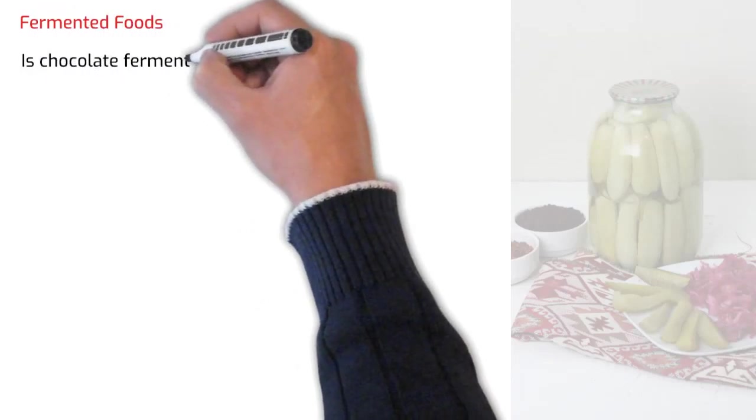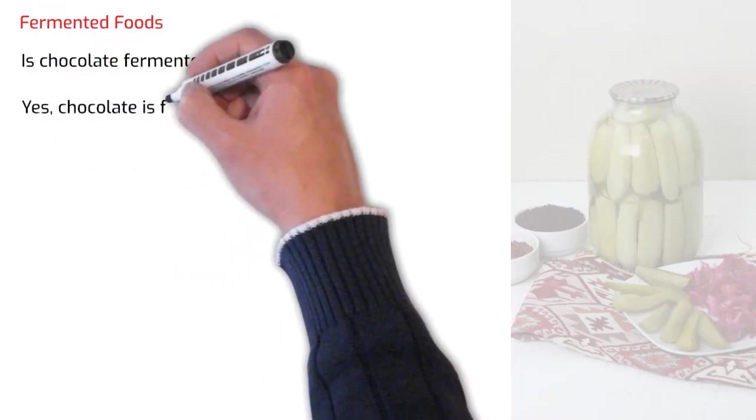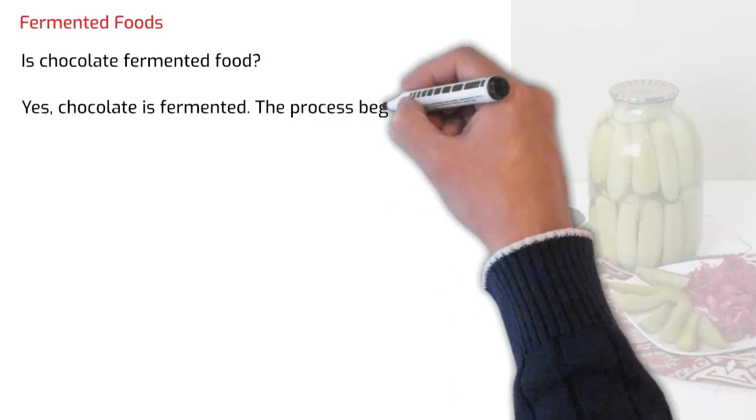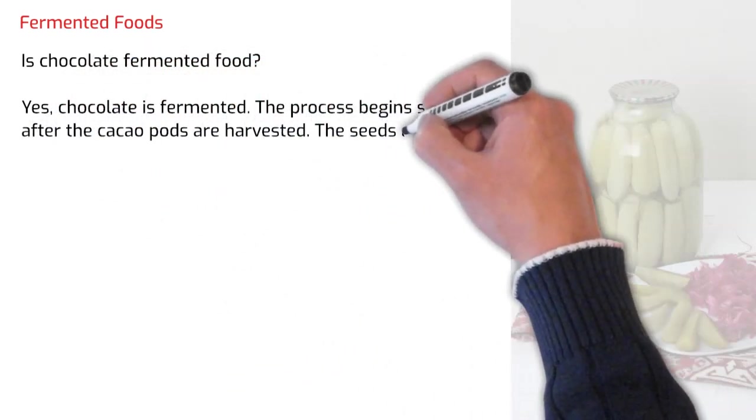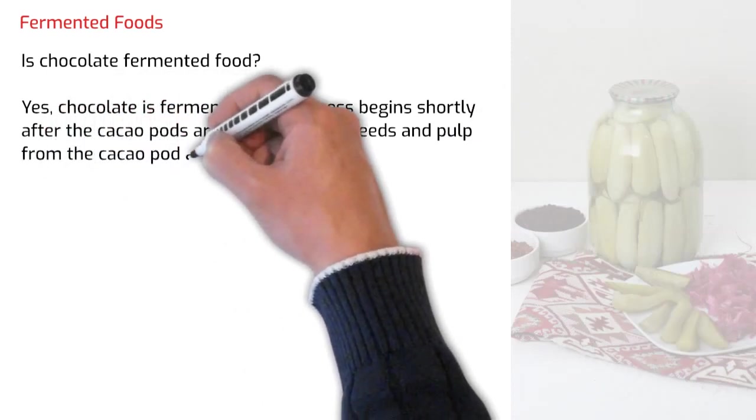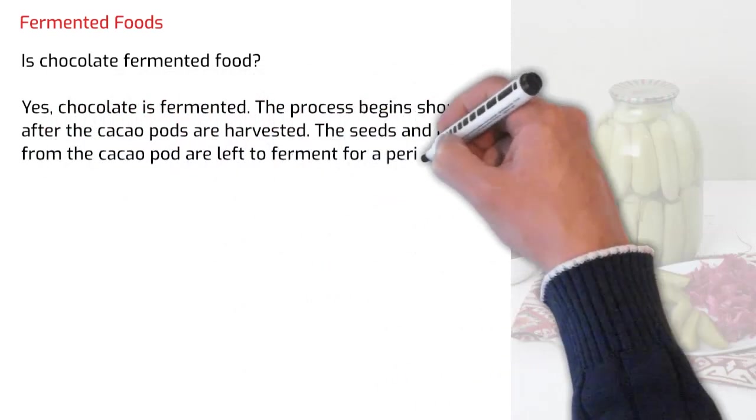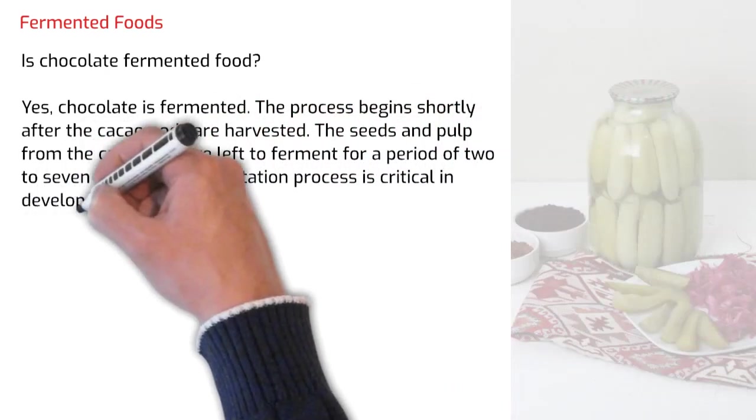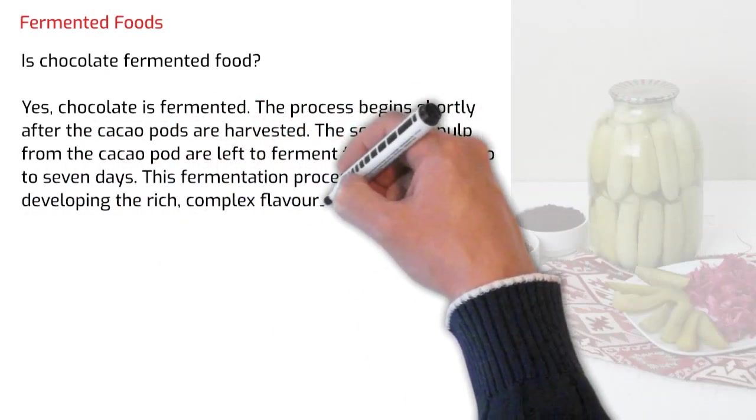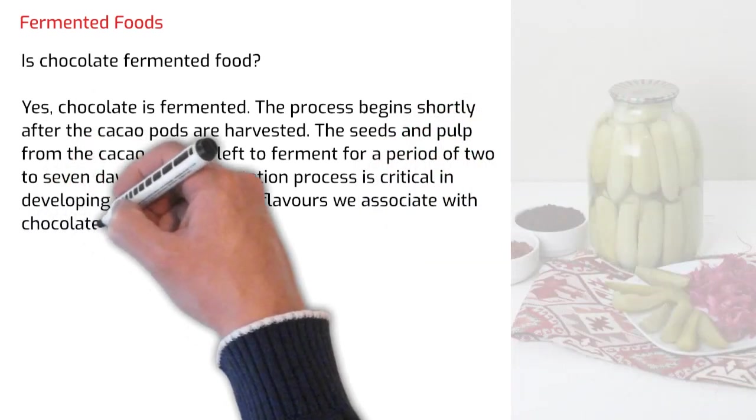Is chocolate fermented food? Chocolate is fermented. The process begins shortly after the cacao pods are harvested. The seeds and pulp from the cacao pod are left to ferment for a period of two to seven days. This fermentation process is critical in developing the rich, complex flavors we associate with chocolate.